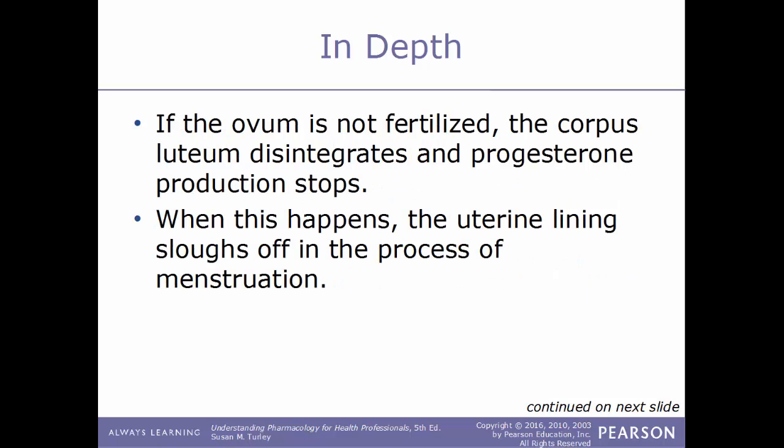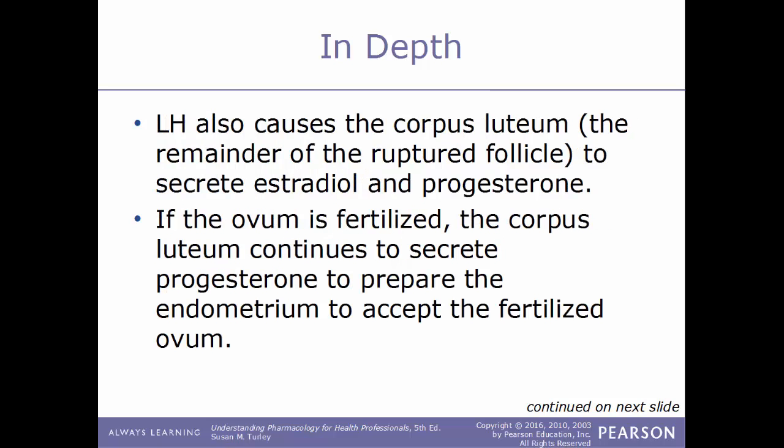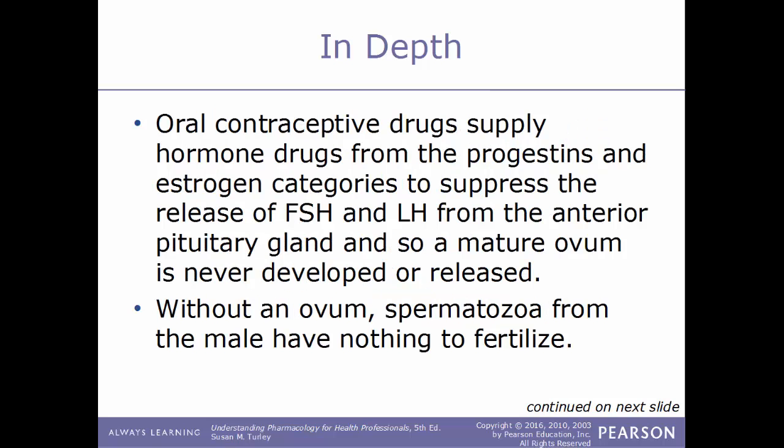If the ovum is not fertilized, the remains of the follicle, called the corpus luteum, will disintegrate and progesterone production will stop. When this happens, the uterine lining loses its source of oxygen, the tissue dies, and sloughs off in the process of menstruation. LH also causes the corpus luteum to secrete estradiol and progesterone. If the ovum is fertilized, the corpus luteum will continue to secrete progesterone to prepare the endometrium to accept the fertilized ovum.